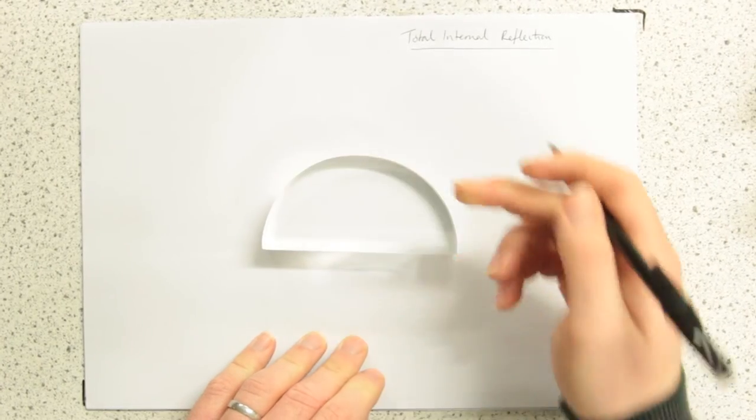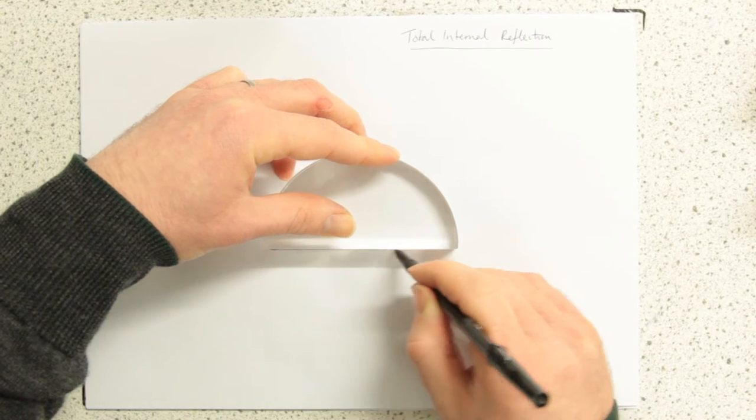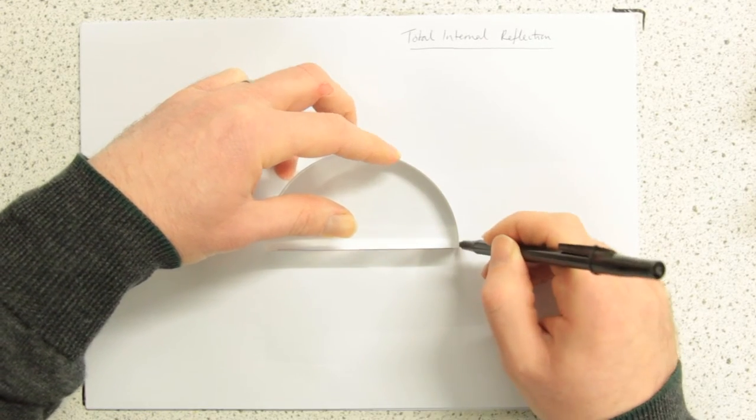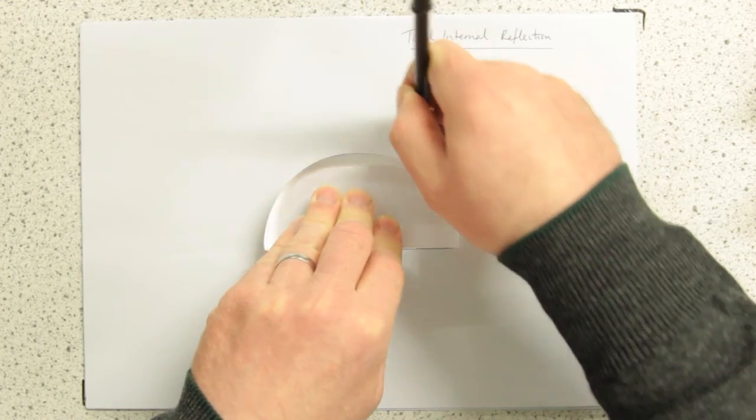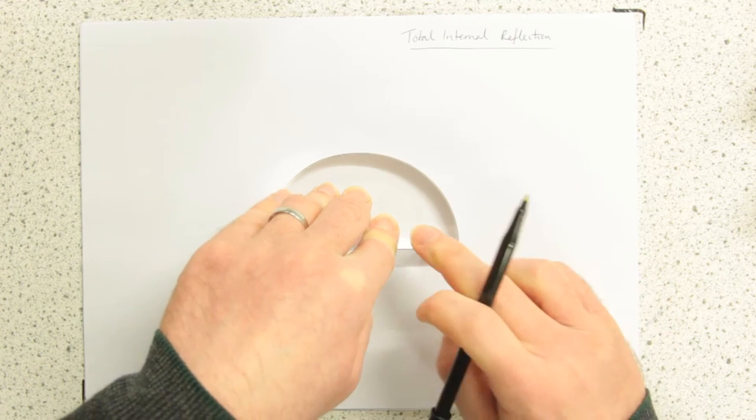Why is it D shaped? Well, it's D shaped because we can actually make sure that there's no refraction happening at the first boundary from air to the glass. We're interested in what happens actually inside the glass.